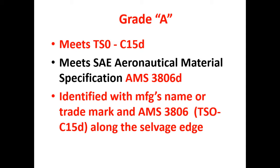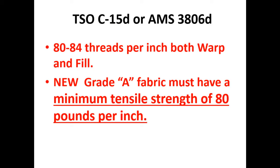Looking at slide 38, we can see some specifications for cotton from TSO C15D. Weight per square yard: 36 to 42 inches of width is about 4 ounces; 60 inches of width is over four and a half ounces.